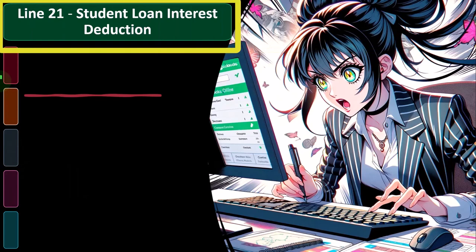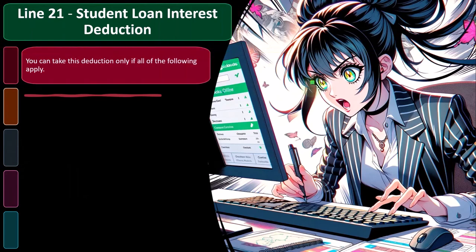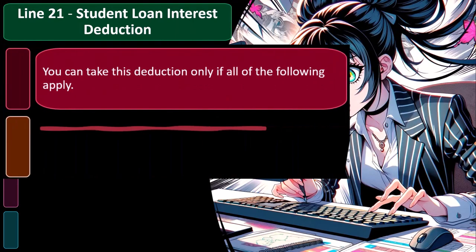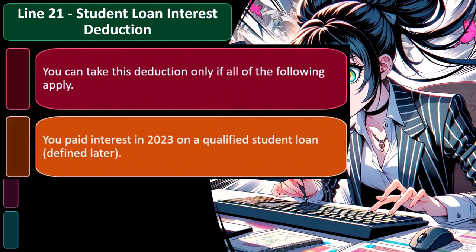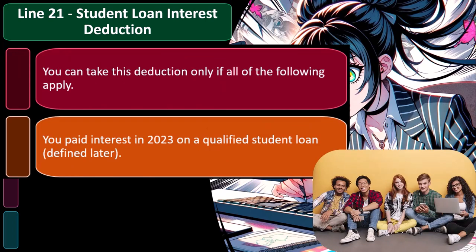So line 21, student loan interest deduction. You can take this deduction only if all the following apply. You paid interest in 2023 on a qualified student loan. When we think about student loan interest, how does this take place?